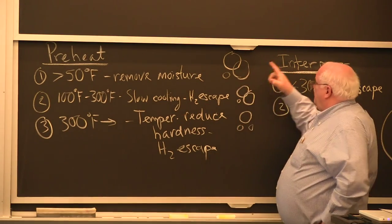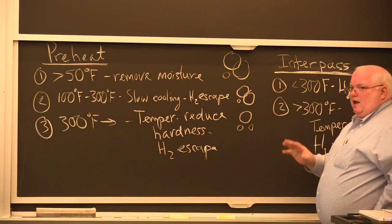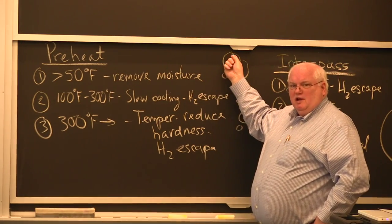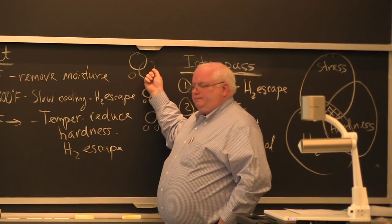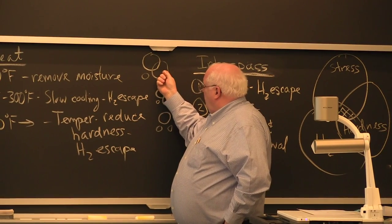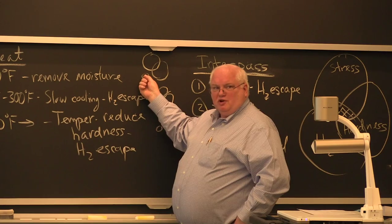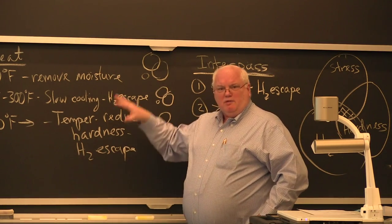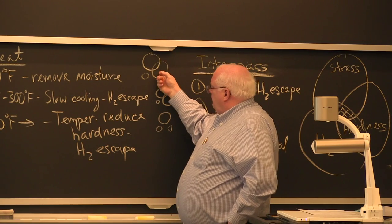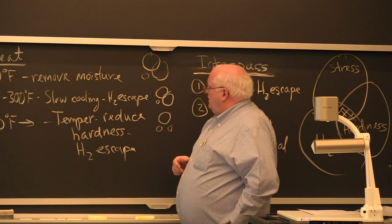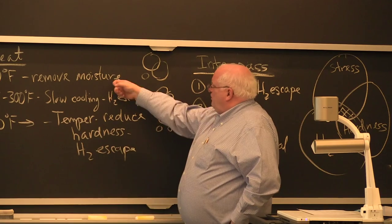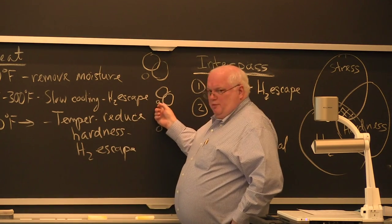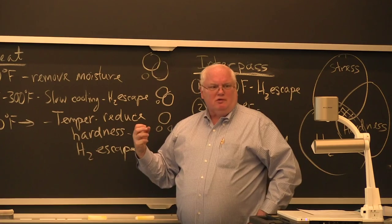So if you take this Venn diagram - I've been doing them consistently: stress, hardness, and hydrogen content. Other people might put them in a different order, but for this class I've been keeping stress at the top, microstructure, and hydrogen content in that order. What you're doing on the first one is removing hydrogen, on the second one removing hydrogen, trying to shrink that circle.